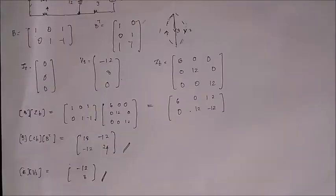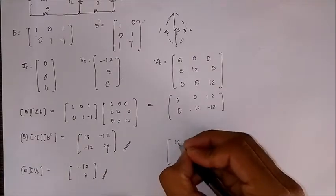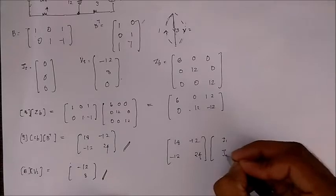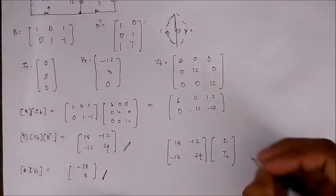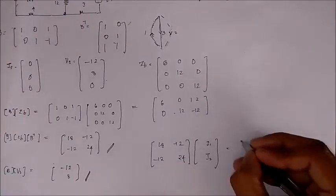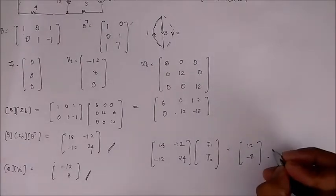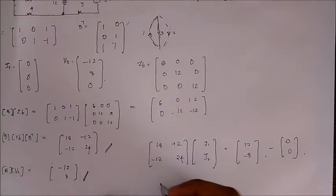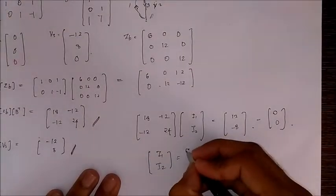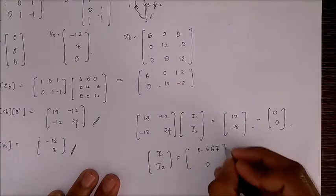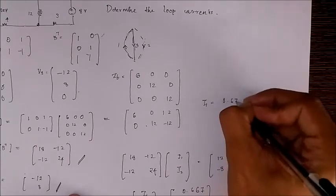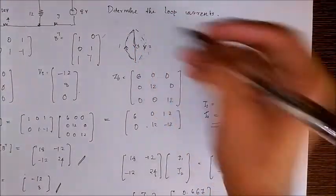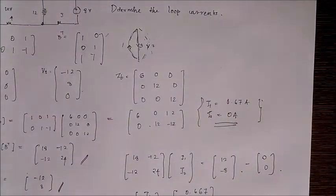B into IS is 0 so we don't have to consider that part. Making all the substitutions we get 18 minus 12, minus 12 24 times i1 i2, which is the loop current, equals 12 minus 8. Solving this we will get 0.667 and 0. Therefore the current through i1 is 0.67 amperes approximately and i2 is 0 ampere. So this is our tie set analysis or mesh analysis in graph theory.